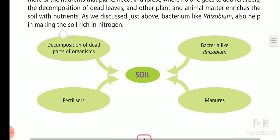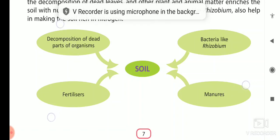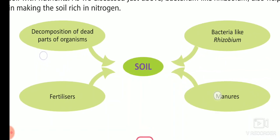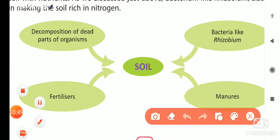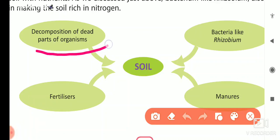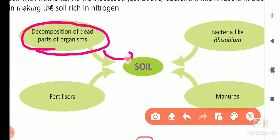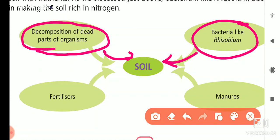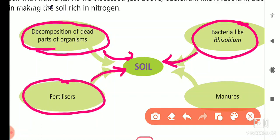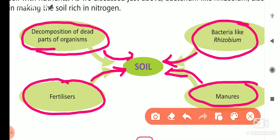In the next part we see a figure related to how soil maintains and replenishes nitrogen. First, decomposition of dead parts of organisms — plants and animals — mixes nitrogen and other nutrients into the soil, making it rich. Second, bacteria like Rhizobium make nitrogen available in the soil. Third, fertilizers and manures also supply nitrogen to the soil. This diagram shows different ways the soil is enriched with nitrogen.